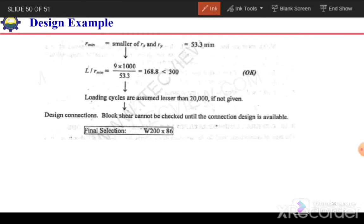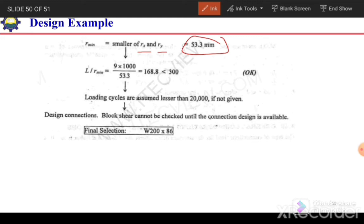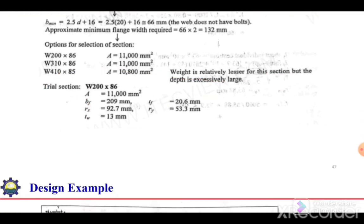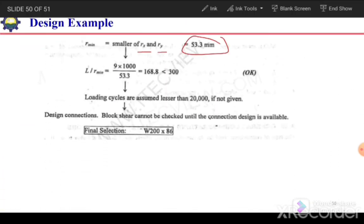Next, check the slenderness ratio, which must be less than 300. For a hot-rolled section, we directly use R_x = 92 mm and R_y = 53.3 mm. The minimum radius of gyration is R_y = 53.3 mm. The slenderness ratio L/r = 9000/53.3, which is less than 300, so this limit is satisfied.